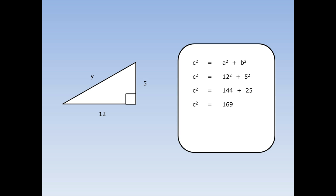Now I've got c squared equals 169. I don't want to know what c squared is — I want to know what c is. So square root both sides, and c is equal to the square root of 169. The square root of 169 is equal to 13, so the hypotenuse equals 13.